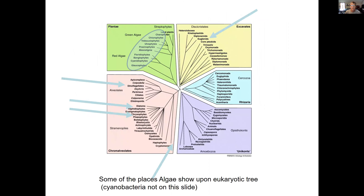The cyanobacteria aren't on this eukaryotic tree as it stands fairly recently. The green algae in the upper left and red algae are considered algae, except for the land plants.